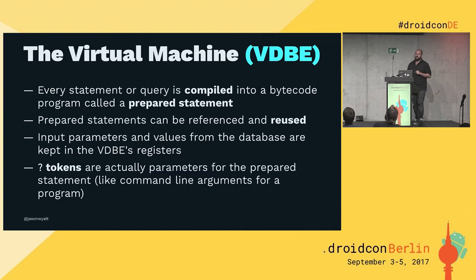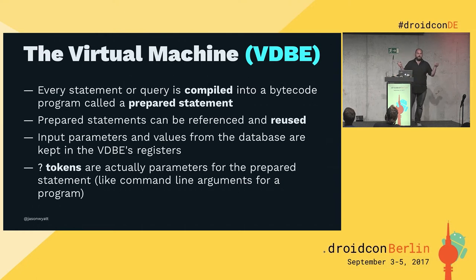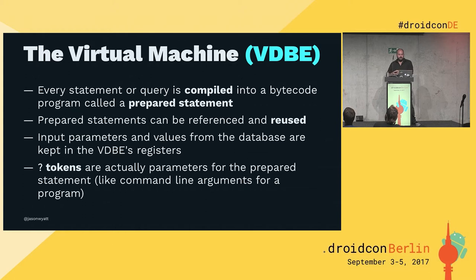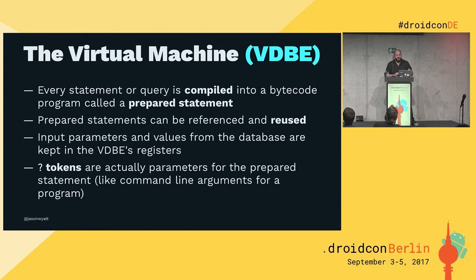The virtual machine — or the VDBE, the virtual database engine — was totally new to me when I was doing my research for this talk. I always just kind of took the term prepared statement for granted. But what a prepared statement really is, is a bytecode program. It's SQLite taking your query, parsing it, turning it into bytecode, and then storing that so you can reuse it. Just like you might expect with other machines, it's got registers, and SQLite uses them to store values from the database for different operations — and that's where the parameters for your prepared statements are kept. Those question marks in your queries aren't just a way to avoid SQL injection attacks — they're also useful for SQLite in making it so that you can reuse these prepared statements and keep them as compiled programs.